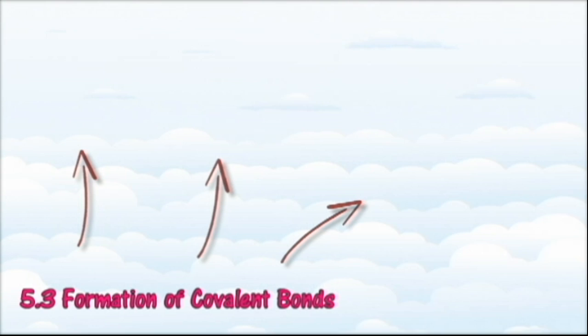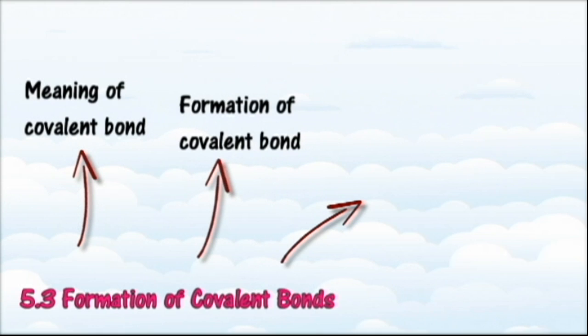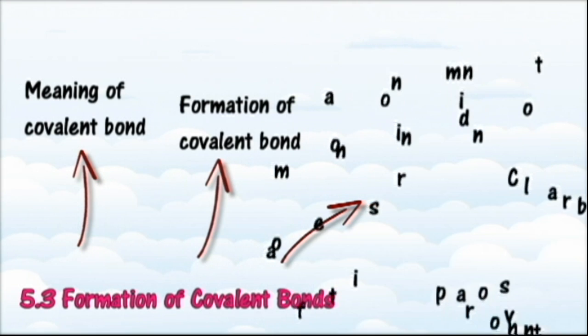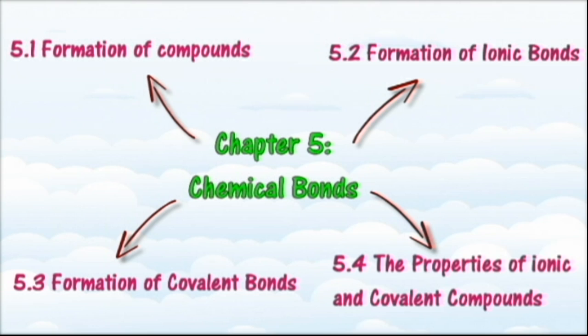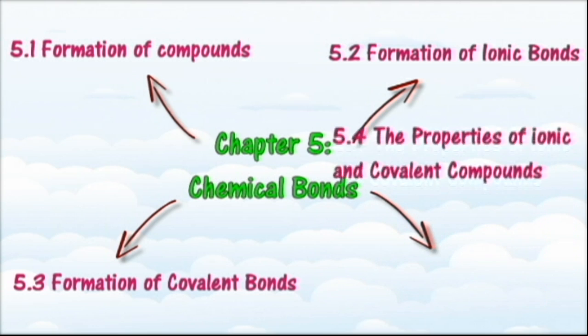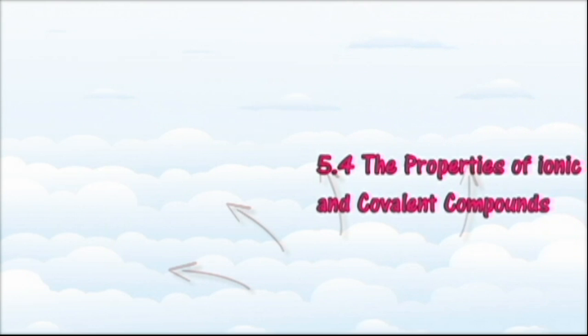In section 5.3 we will learn about the formation of covalent bonds. At the end of this section you should be able to state the meaning of a covalent bond, explain the formation of a covalent bond, illustrate the formation of a covalent bond by drawing electron arrangements, and compare and contrast the formation of ionic and covalent bonds.